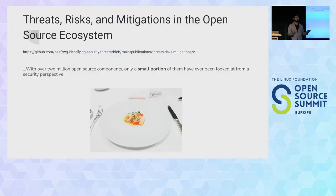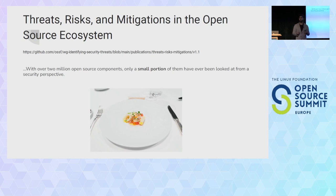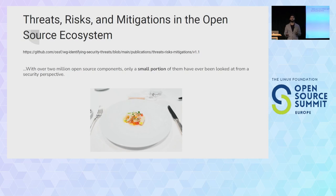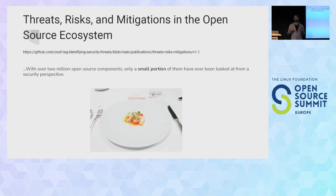I also like to refer to this research from around 2020, called Threats, Risks and Mitigations in the Open Source Ecosystem. The main takeaway is that essentially almost no open source projects have been looked at from a security perspective, from that independent review perspective. As the ecosystem continues to grow and new projects come, this number substantially grows, and that small portion of reviewed projects still remains the same.